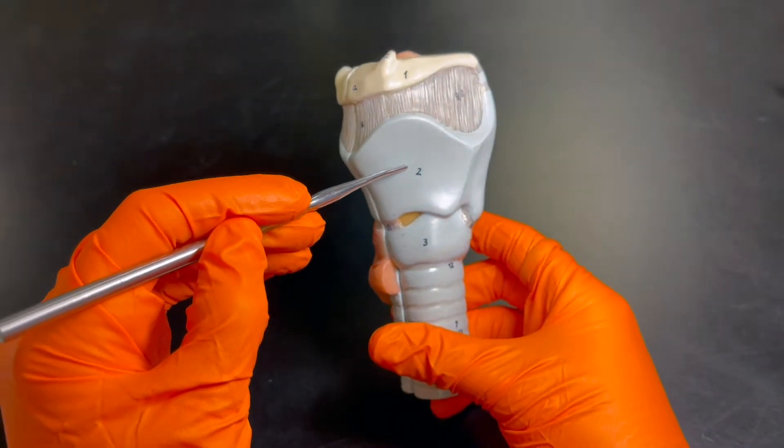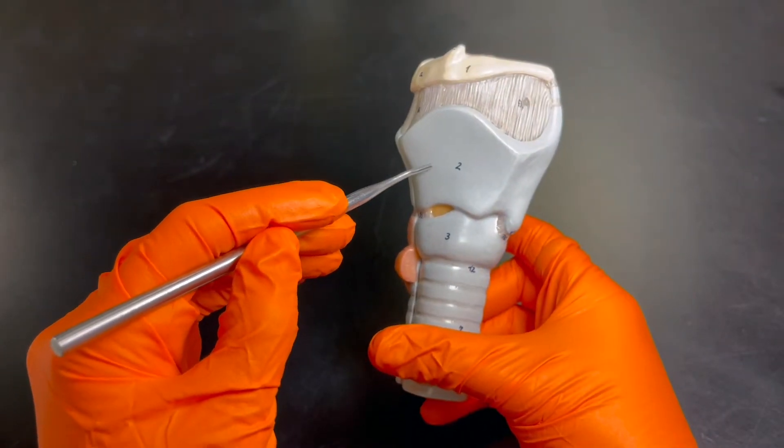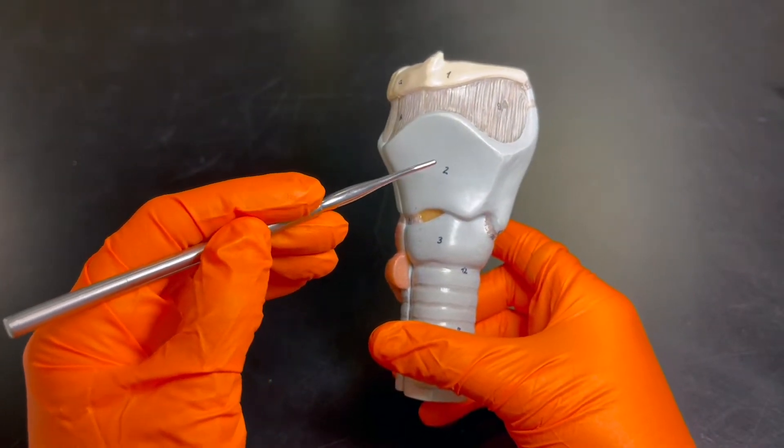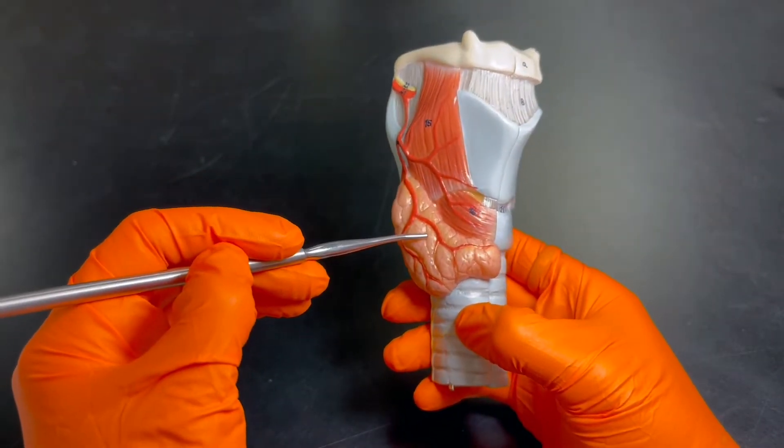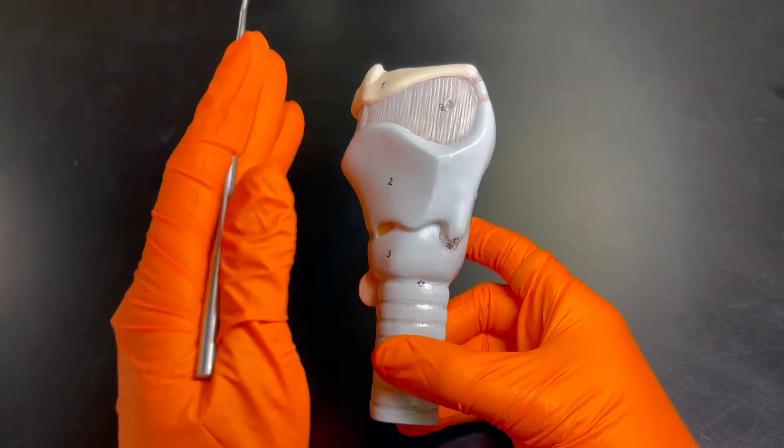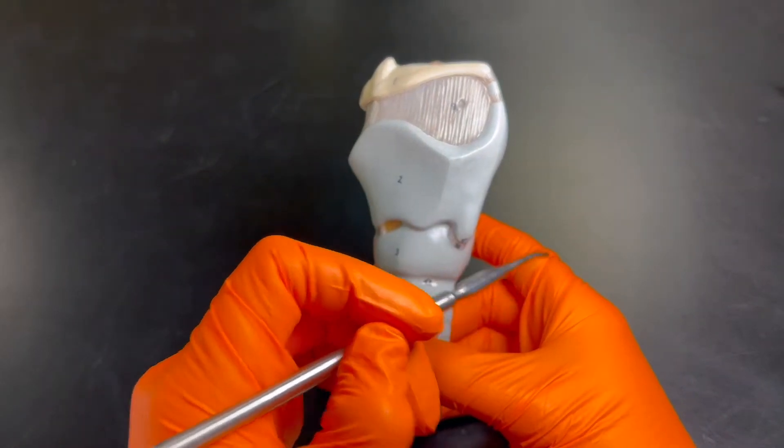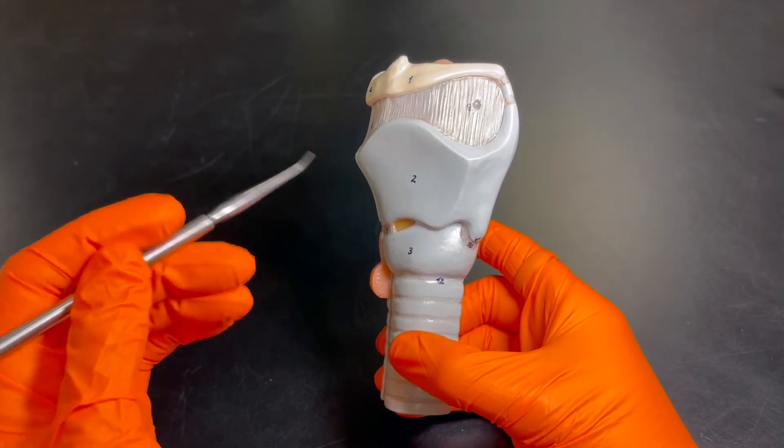Then right here we have the thyroid cartilage. The thyroid cartilage is interesting - you've probably seen this before and just didn't realize it. It's named as such because we have the thyroid gland right here.